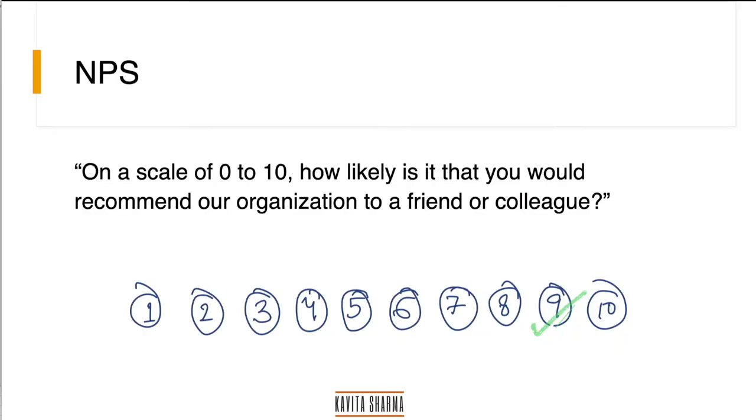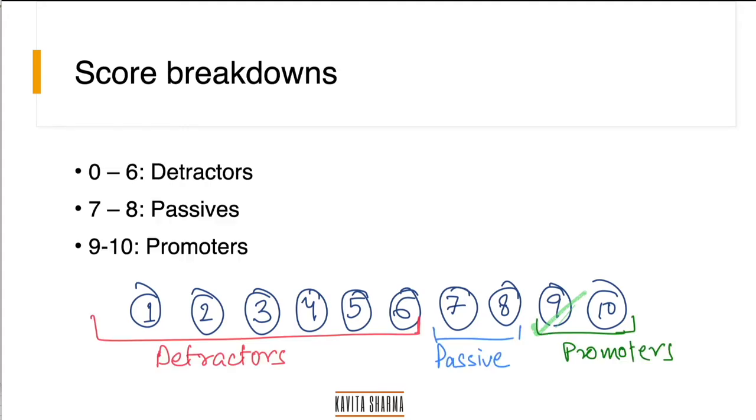Typically NPS is, you've been given surveys by companies whenever you buy a product from their website or if you go to a place. The surveys are something like this: on a scale of zero to ten, how likely is it that you would recommend your people or friends to our product or organization, and you give a number to it. So typically these numbers are then evaluated and there is a score breakdown and categories are made.